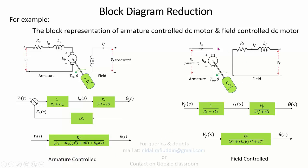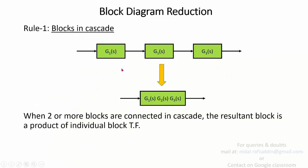Similarly, for the field control DC motor, there are two blocks representing different parts of the system, which can be reduced by applying block diagram reduction technique to obtain the final transfer function. There are six rules that will be discussed. The first rule applies when blocks are connected in cascade or series connection.